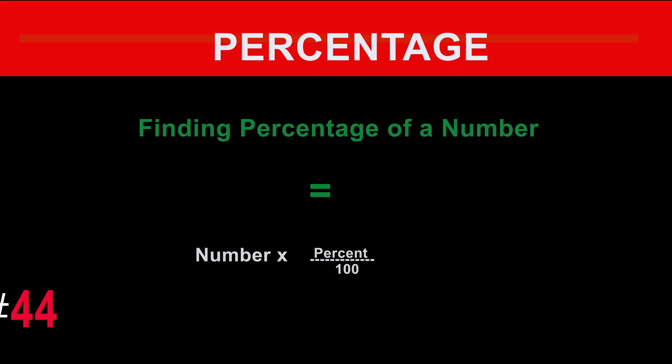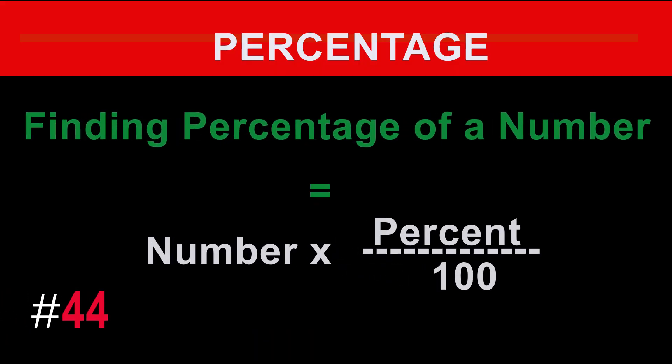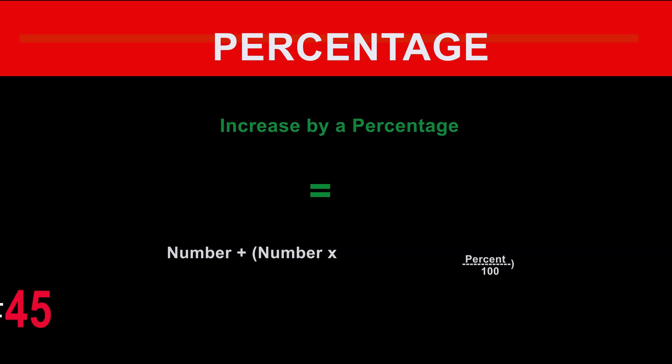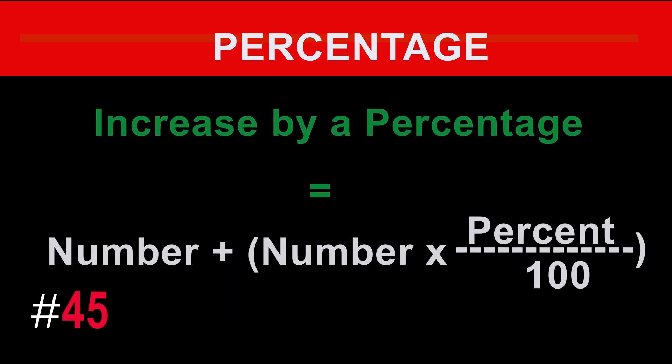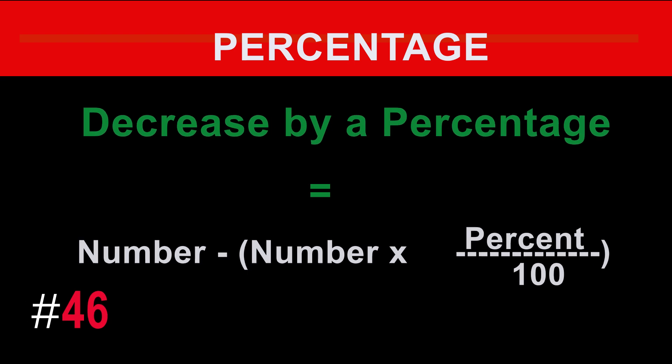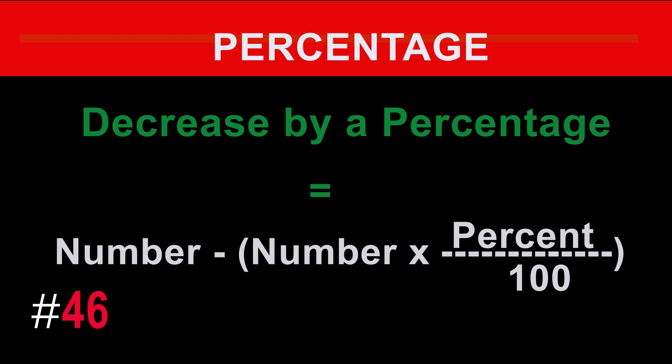Finding the percentage of a number equals number times percent divided by 100. Increase by a percentage equals number plus (number times percent divided by 100). Decrease by a percentage equals number minus (number times percent divided by 100).